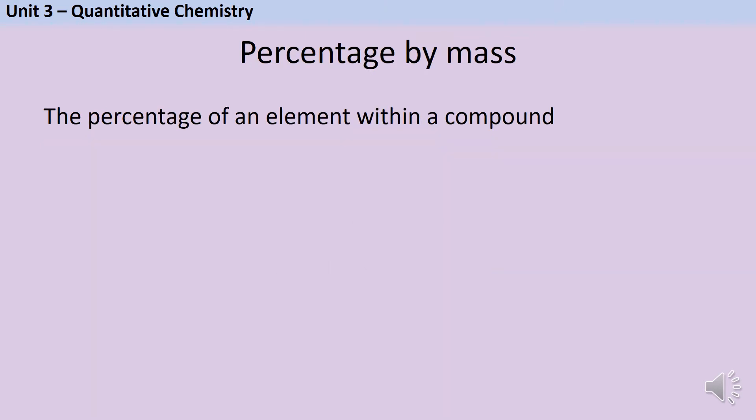We can use the relative formula mass of a compound to calculate the percentage by mass of each element within the compound. In other words, how much of the total mass of that compound is that one particular element that we're interested in.